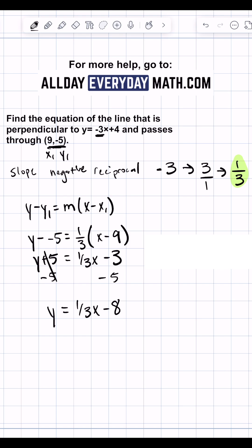And so our answer in slope intercept form would be y equals one third x minus 8.